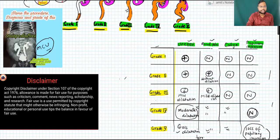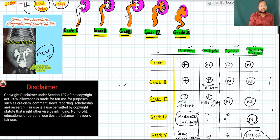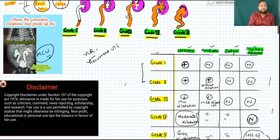From a treatment point of view, different urological societies have different guidelines. For Grade 1 and Grade 2, most developed countries keep the child under observation. Since VUR is a common cause of recurrent UTI in children, in our country we follow antibiotic prophylaxis and regular follow-up.